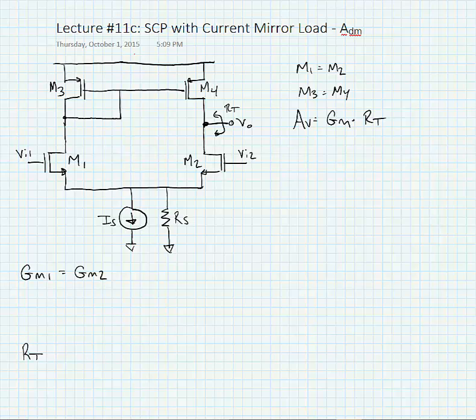With this differential pair we have perfect symmetry down the middle, and hence we're saying that M1 is equal to M2 and M3 is equal to M4. We're going to find the voltage gain, the differential mode voltage gain, and we know that has a general form of big GM times the total resistance at the output node.